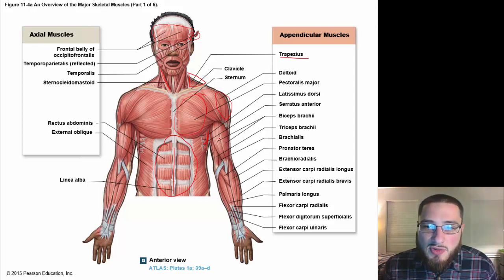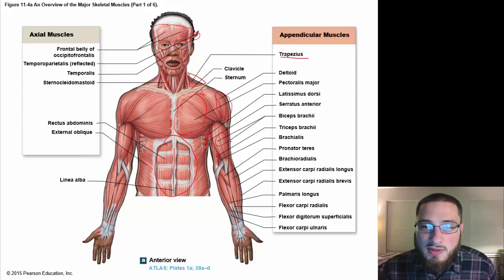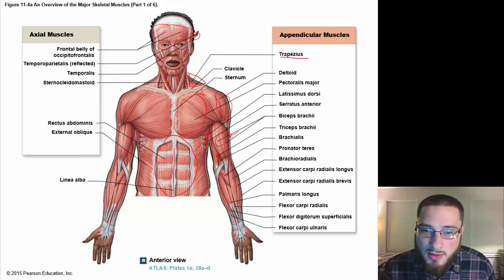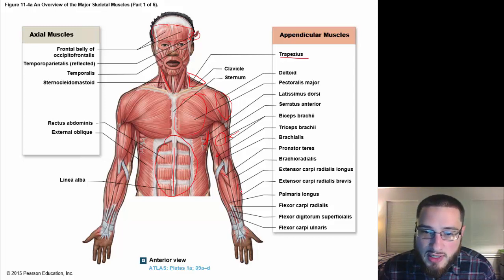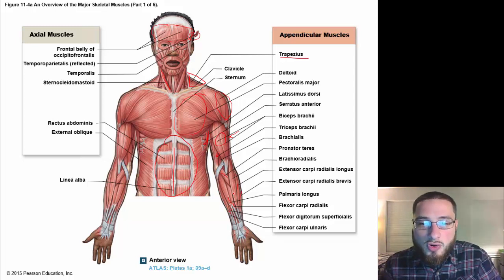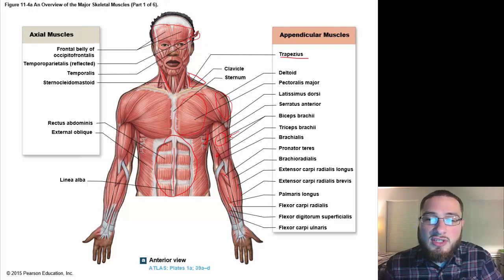Within the arm, you have your biceps brachii — your biceps. In the back, acting as an antagonist, is your triceps brachii. We have our brachialis deep within. Then we have our pronator teres, extensor carpi radialis longus, extensor carpi radialis brevis, palmaris longus, flexor carpi radialis, flexor digitorum superficialis, and flexor carpi ulnaris — those are all of the forearm muscles. The upper arm mainly consists of the brachialis, biceps brachii, and triceps brachii.